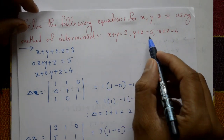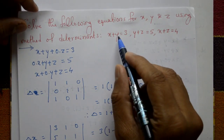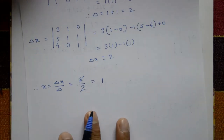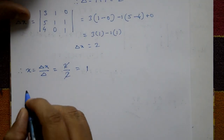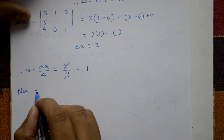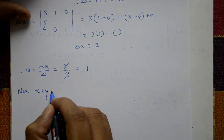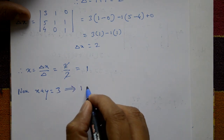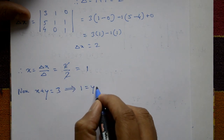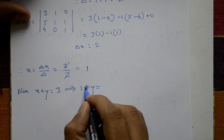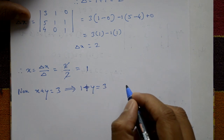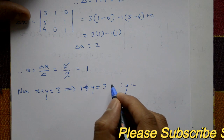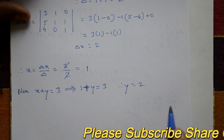Now find y and z by substituting back into suitable equations. Taking the first equation, x plus y equals 3. Substituting x equals 1: 1 plus y equals 3, therefore y equals 3 minus 1, so y equals 2.